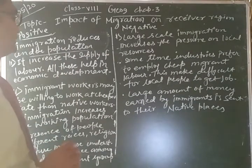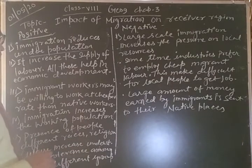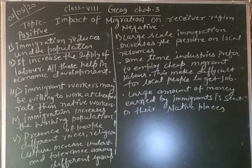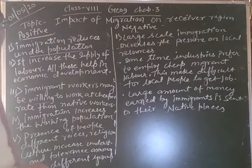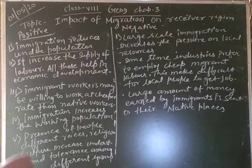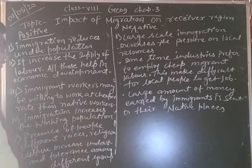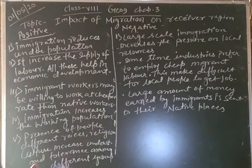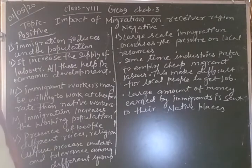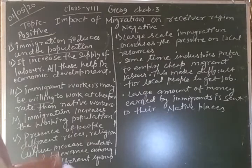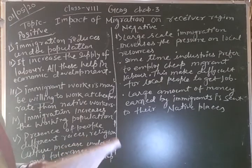Immigrant workers may be willing to work at a cheaper rate than native workers. Immigration also increases the working population and helps in more production in industries. Additionally, the presence of people of different religions, races, languages, and cultures increases understanding and tolerance among different groups. These are the positive impacts on the receiver region.